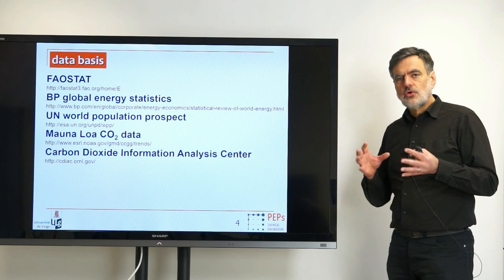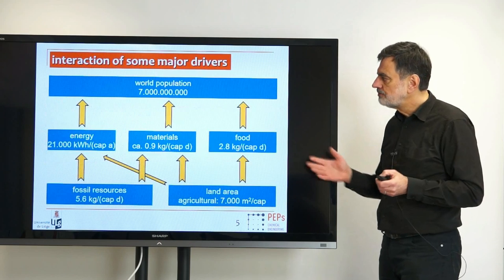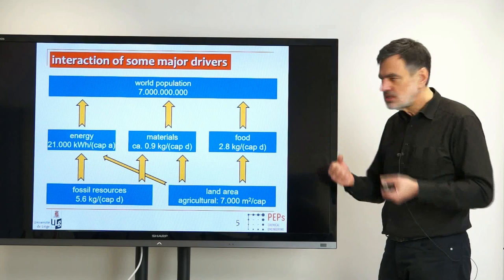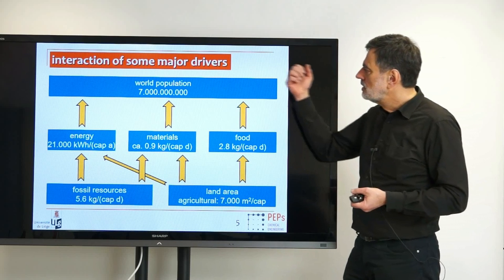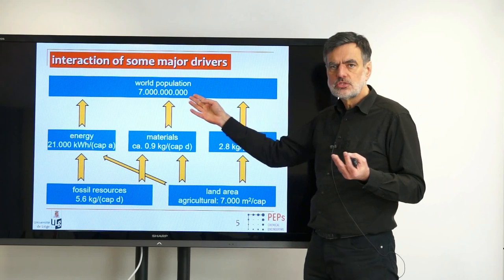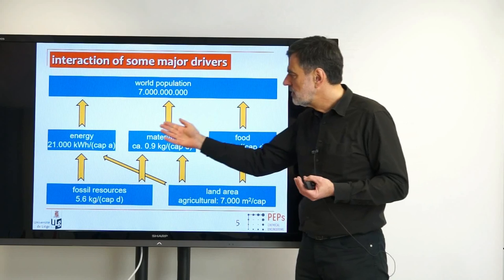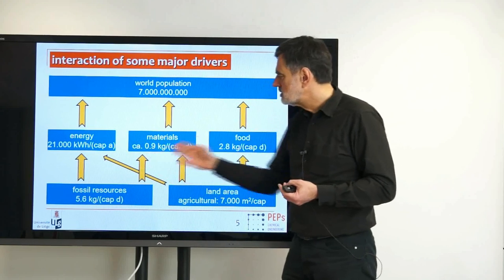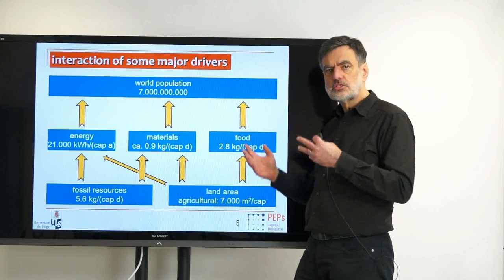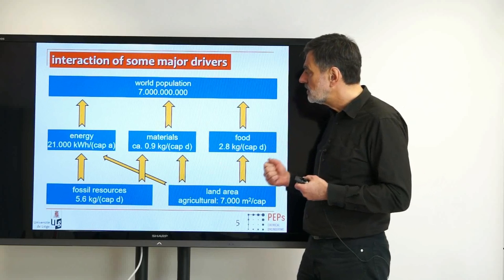To get a first idea of the relevant parameters, let's look at the main variables. First is the world population — currently around 7 billion people — and we are using energy, materials, and food as the three major things to consider. On the global average, we use 21,000 kilowatt hours per capita per year of energy, roughly 0.9 kilograms per capita per day of materials such as plastics, pharmaceuticals, and detergents, and we produce 2.8 kilograms per capita per day of food in primary production.